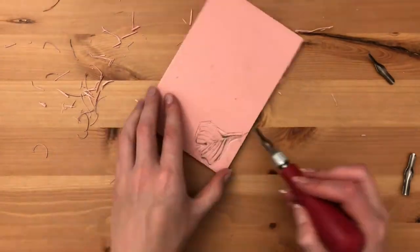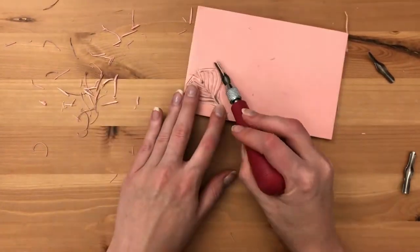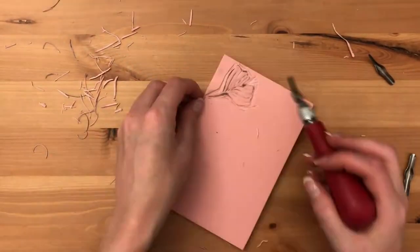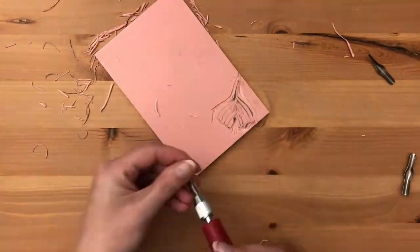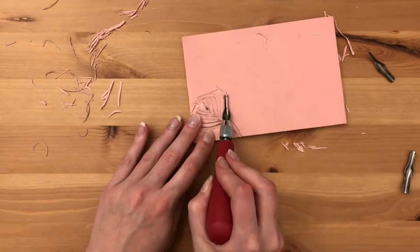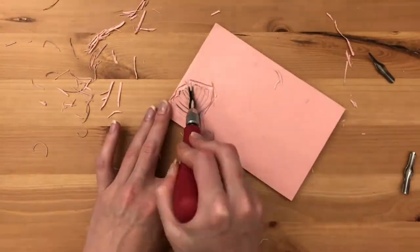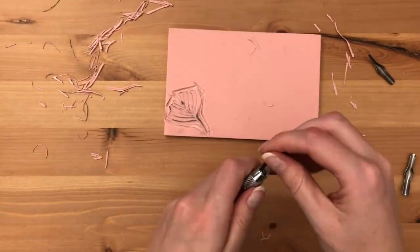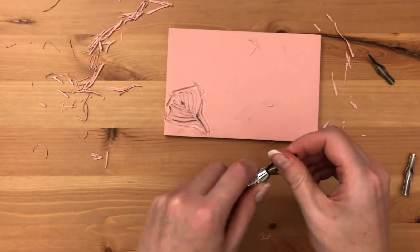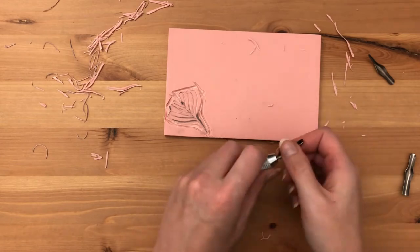I only did two passes with a small v-shaped nib for the veins but as I see later I could have gone over one or two more times. Next I moved up to the u-shaped nib to clean up around the outside.